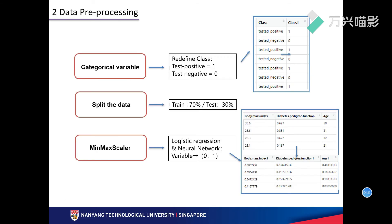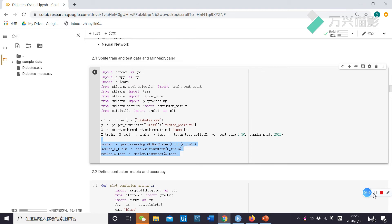Next, the procedure is data preprocessing. I will contain these three methods. First, I will define the class: test positive equals 1 and test negative equals 0. And then, I will split the data as 70% and 30%. Then, I will normalize the data for logistic regression and neural network, replacing values with the range from 0 to 1. We don't need to conduct normalization on the decision tree because it doesn't care about the value of variables; instead, it requires the distribution and relationship between variables.